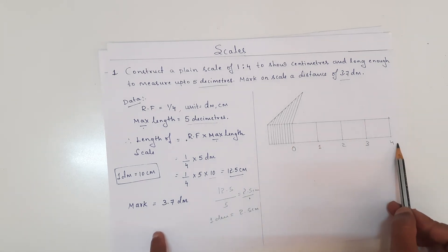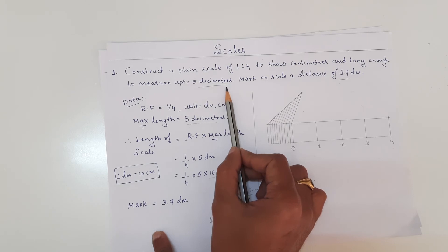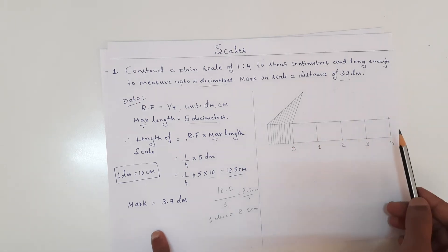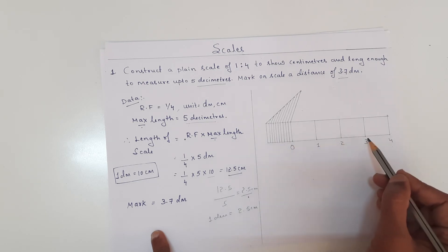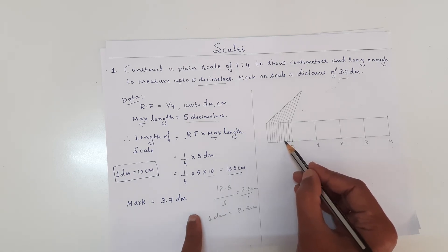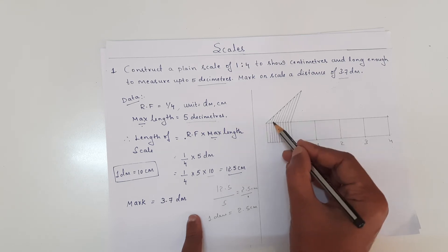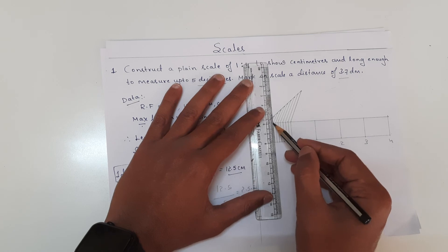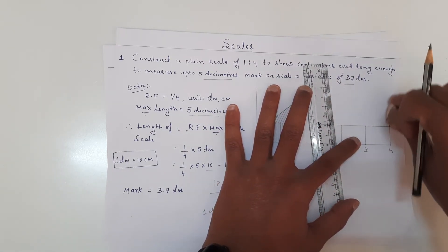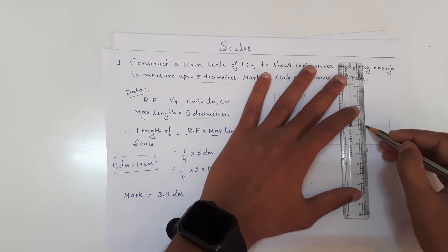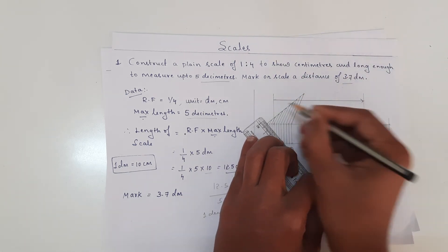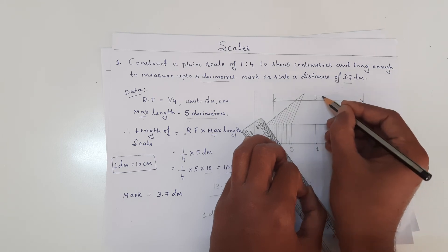Now I have constructed the scale which measures 5 decimeters. I need to represent 3.7 decimeters. First I am going to measure 0 to 1, 2, and 3 — this represents 3 decimeters. And 0.7 decimeters is 1, 2, 3, 4, 5, 6, 7 centimeters. So this represents 3.7 decimeters.